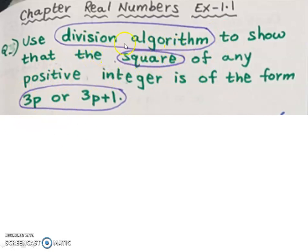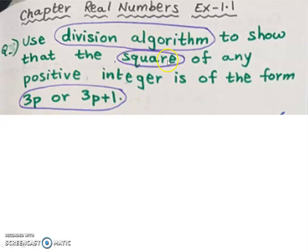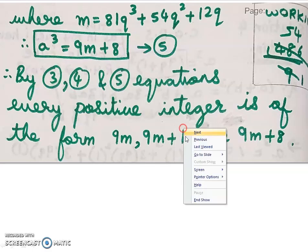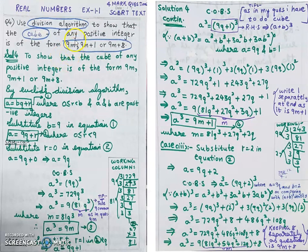The key is how to decide which value of remainder r to substitute. For the square case: 0² = 0 so r = 0, and 1² = 1 so r = 1. For the cube case: 0³ = 0 so r = 0 in Case 1; 1³ = 1 so r = 1 in Case 2; and 2³ = 8 so r = 2 in Case 3. Match the cube or square of r to the constant in the required form.